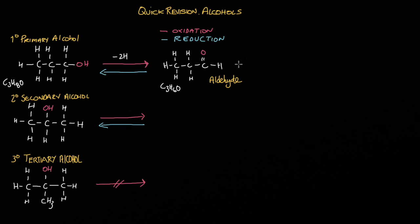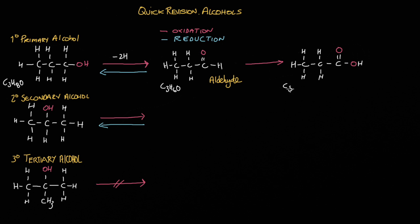Aldehydes can also be oxidised to give carboxylic acids. You can clearly see the carboxylic acid functional group at the end of the molecule — COOH. The molecular formula for this carboxylic acid is C3H6O2. In this particular case we've gained an oxygen, which makes this an oxidation reaction. So aldehydes can be oxidised to give carboxylic acids.